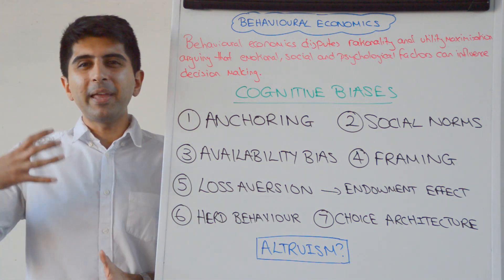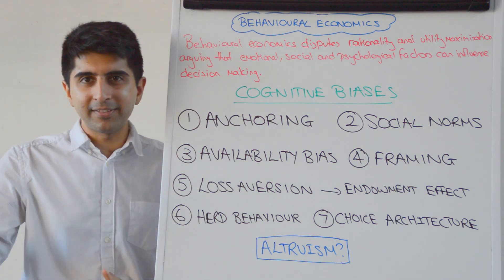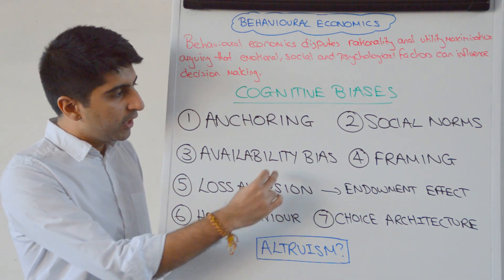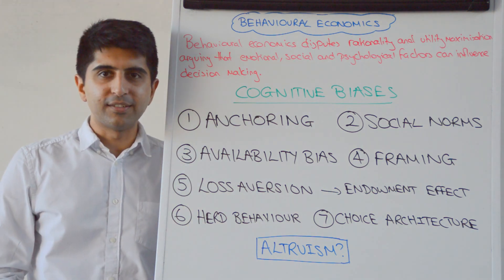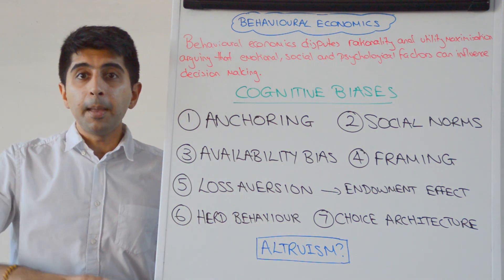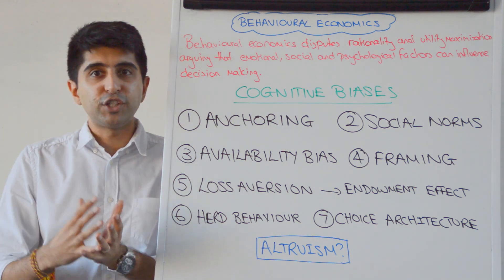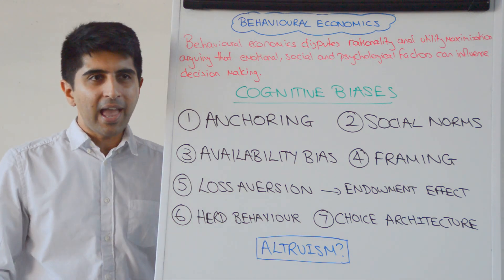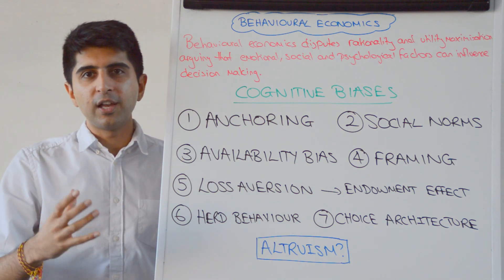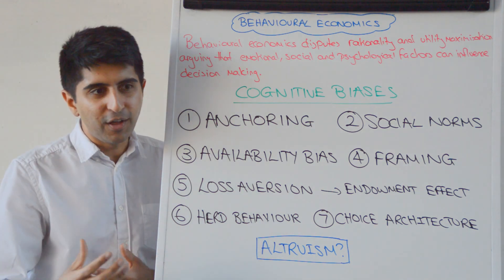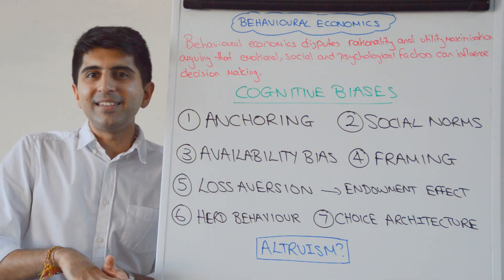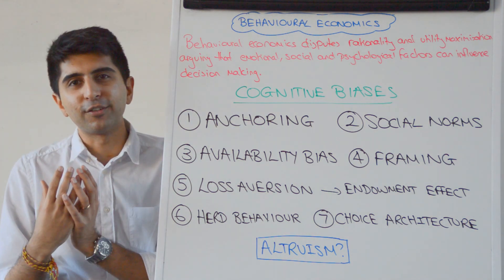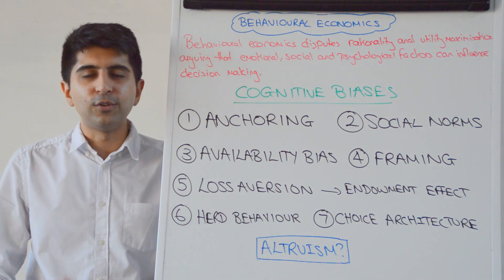Availability bias. This is when we make decisions based on how easy it is for us to conjure up examples, even if those examples completely inflate the real probability of that thing actually happening. A good example is going swimming in Australian seas. We might decide not to go swimming because we perceive such a high risk of a shark attack. Why? Because examples of shark attacks come to us so easily — every time there is one, it features on the news. Whereas in reality, the probability of a shark attack is very, very low. But because the examples come to mind so easily, we over-inflate that risk.